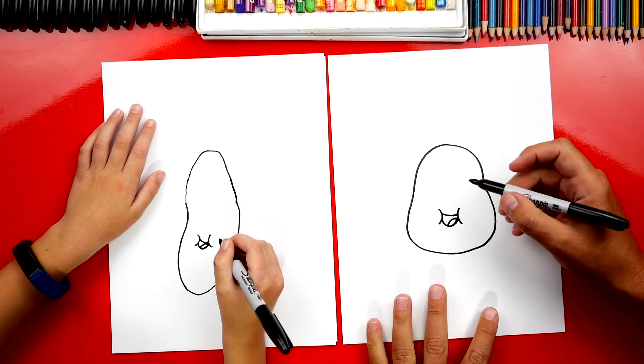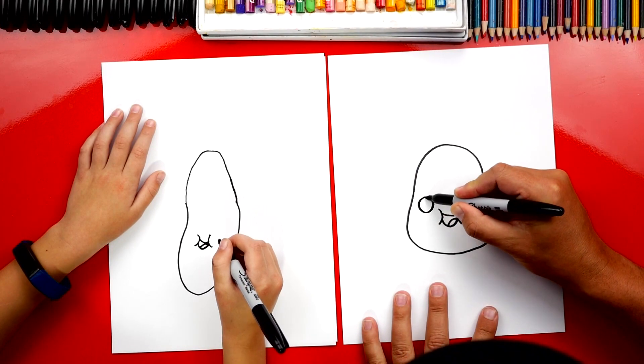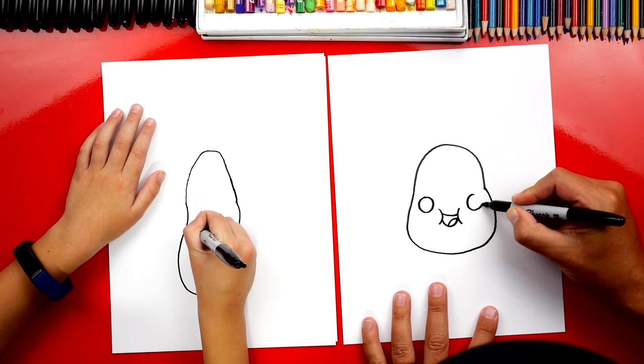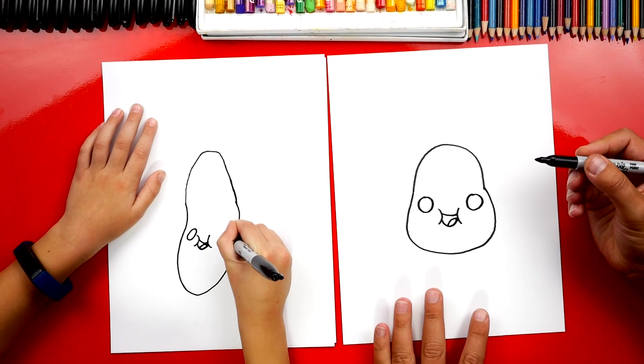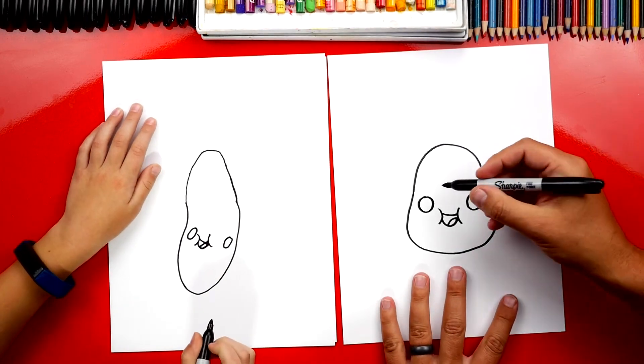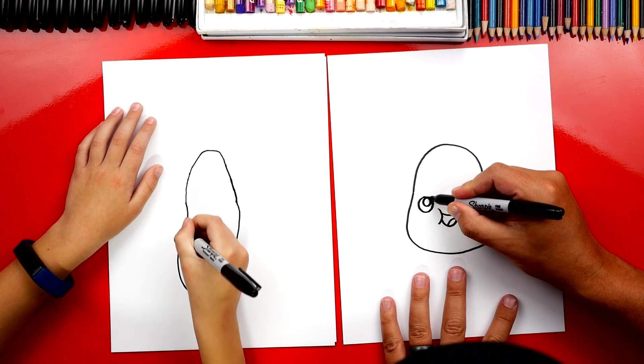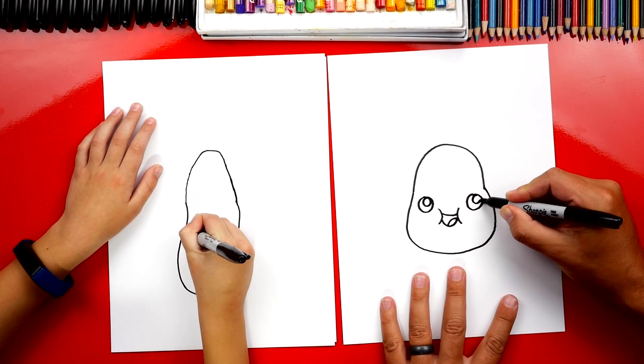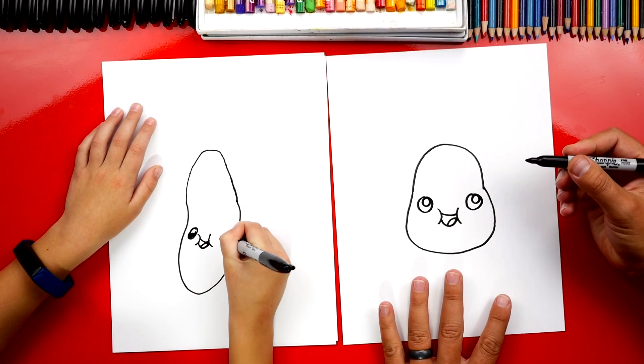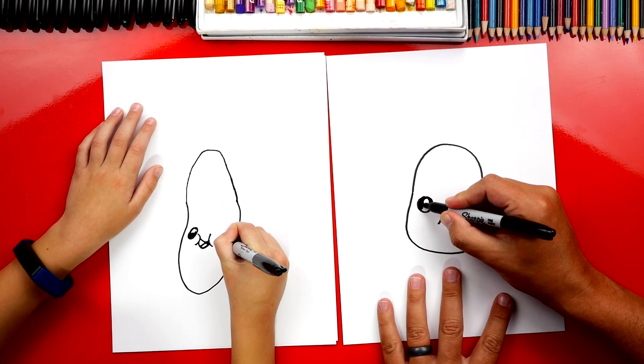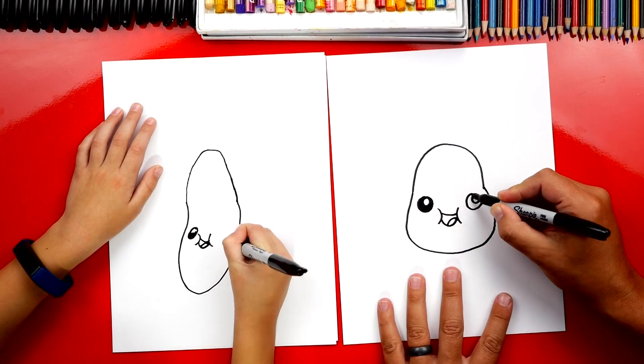All right now let's draw the eyes. I'm gonna draw a circle over here and I'm gonna draw another circle over here on this side. I like yours. Then we're gonna draw a smaller circle on the top right so that his eyes look shiny. And then you could color in the big circle too and leave the little one white.